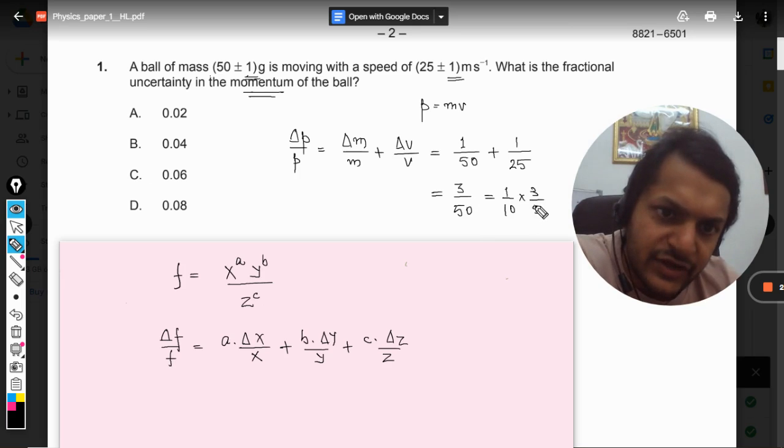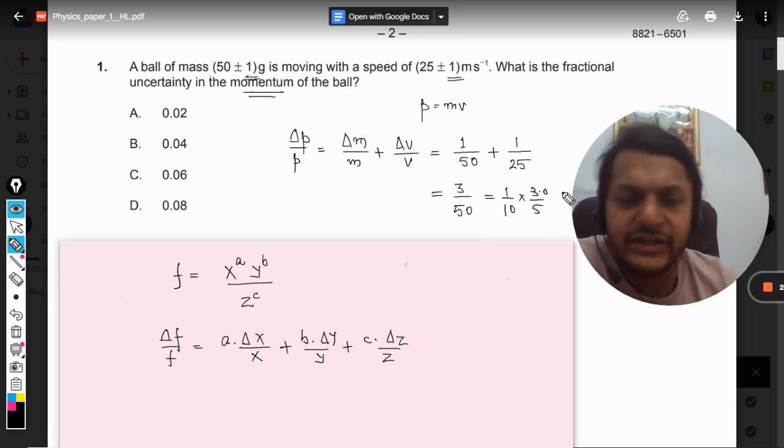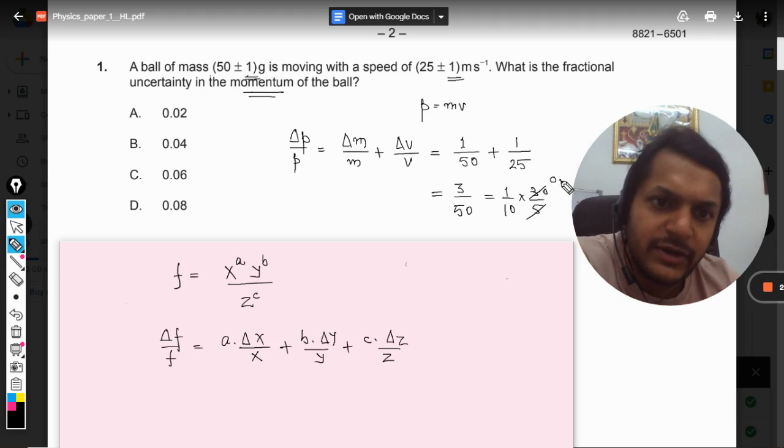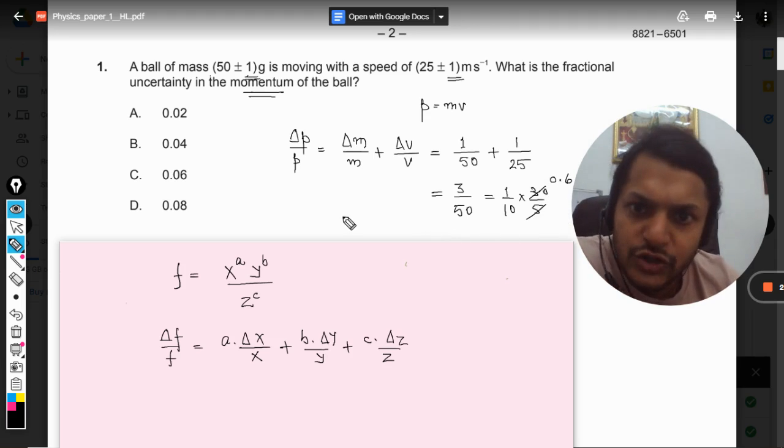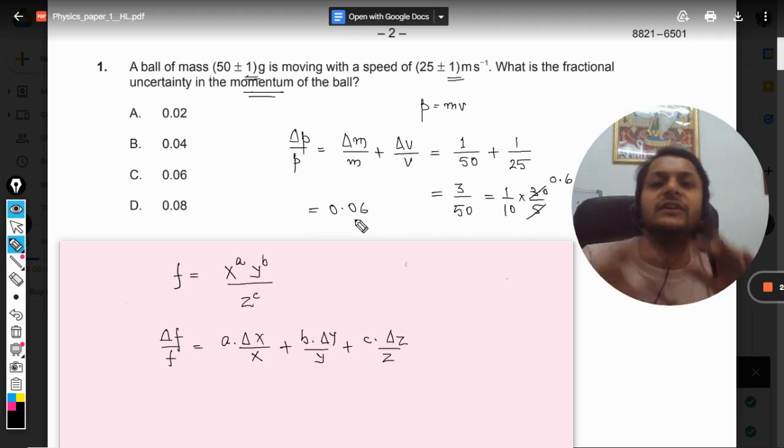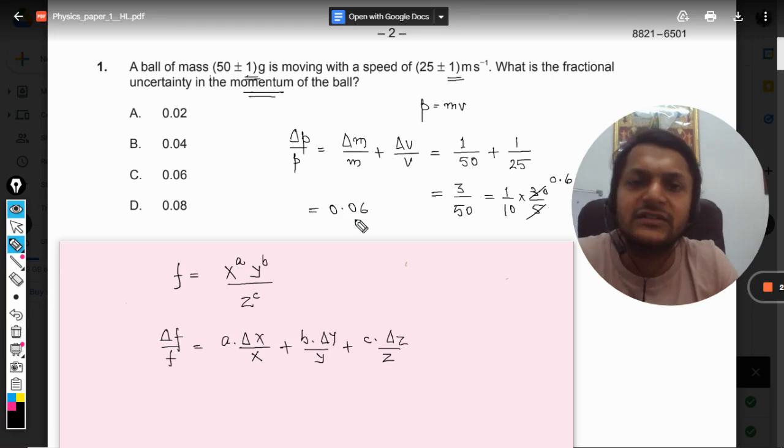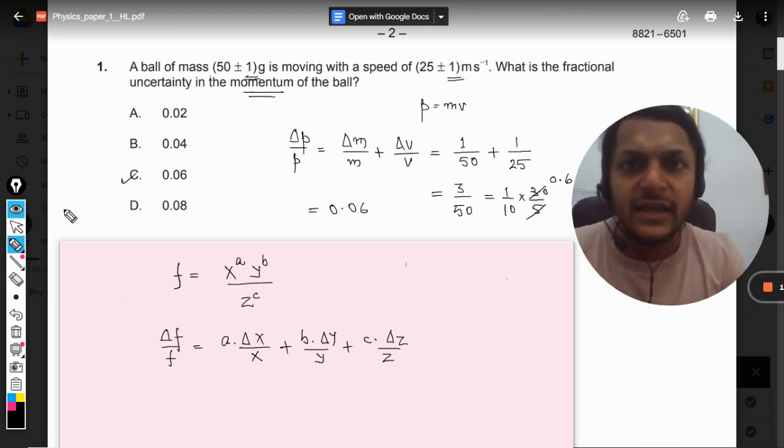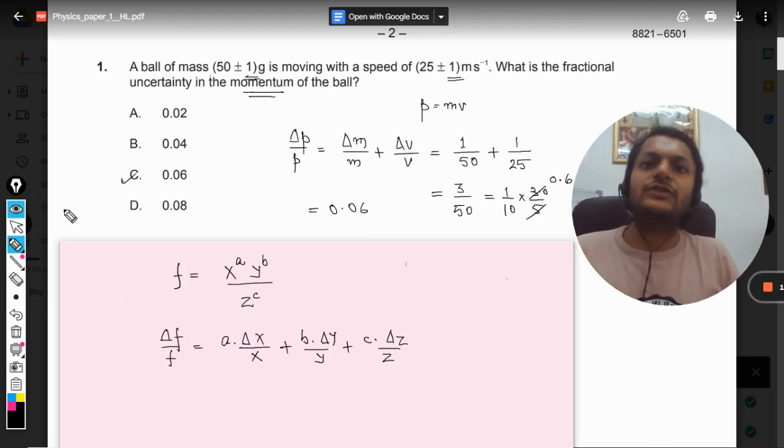On solving this 3 by 50, how can you do that? 1 by 10 multiply by 3 by 5, and you can write it as 0.3 divided by 5, so it will be coming out to be 0.06. So your answer is coming out to be 0.06. This is the fractional uncertainty in the momentum for the body. When we verify the options, yes, C is the correct answer for this question.